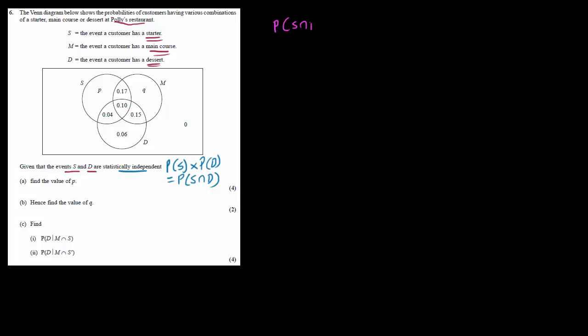Now, what we have to remember is that S and D — that means the starter and the dessert — they are independent. So what that means is that probability of S multiplied by probability of D is equal to probability of S intersection D. That is what is meant by statistically independent. So that's the information we have. Let's write down the probability of S intersection D. That probability is given by this region over here: 0.04 plus 0.10, which turns out to be 0.14.